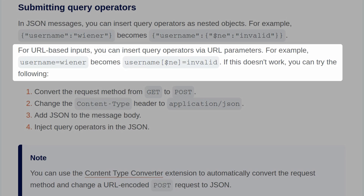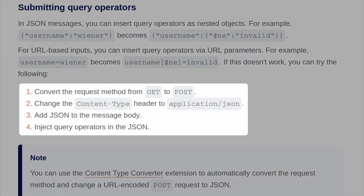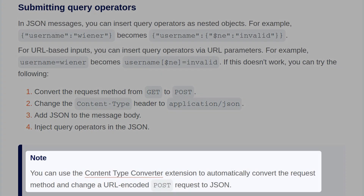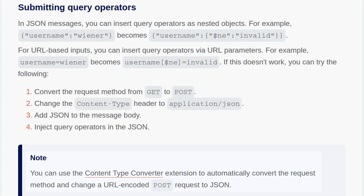If that doesn't work, you can also try converting the request method from GET to POST, change the content type to application/JSON, and add the relevant JSON to the message body to inject these operators. There is an extension called Content Type Converter which will automatically swap between JSON and XML, so you can use that to make that change.